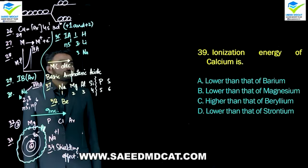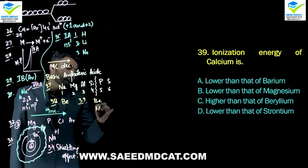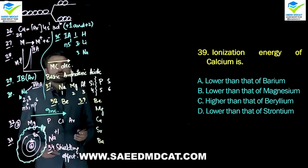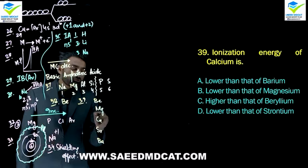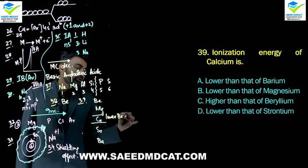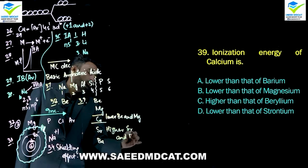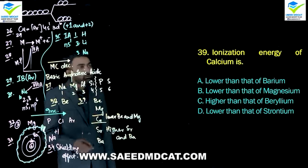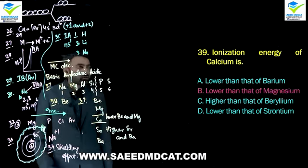Question 39: Ionization energy of calcium compared to other group 2A elements? Group 2A order from top to bottom: beryllium, magnesium, calcium, strontium, barium. Calcium's ionization energy will be lower than beryllium and magnesium (higher up in the group) and higher than strontium and barium (lower in the group). So the correct answer is beta option: lower than that of magnesium — because going down the group ionization energy decreases.